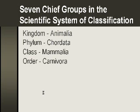Then there is the order. Carnivora, for example — these eat flesh — while Insectivora would be those that eat insects.